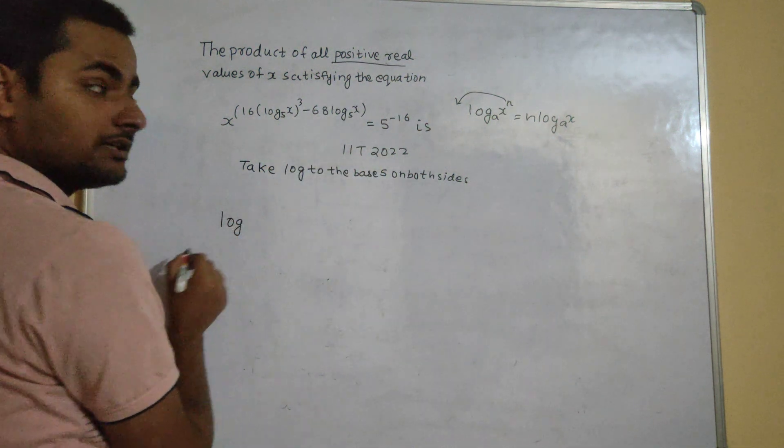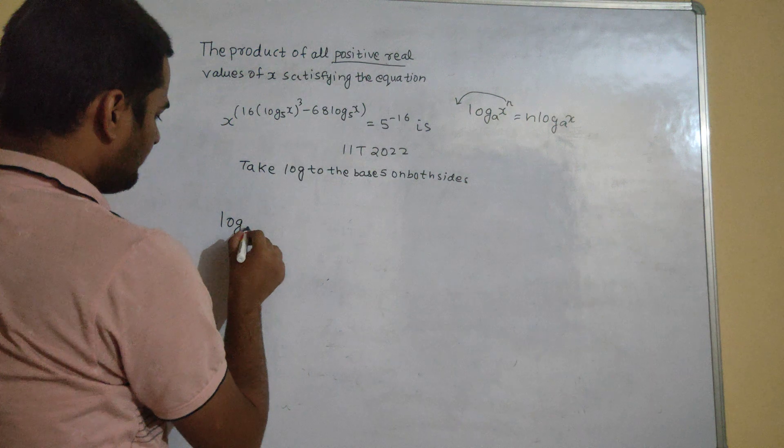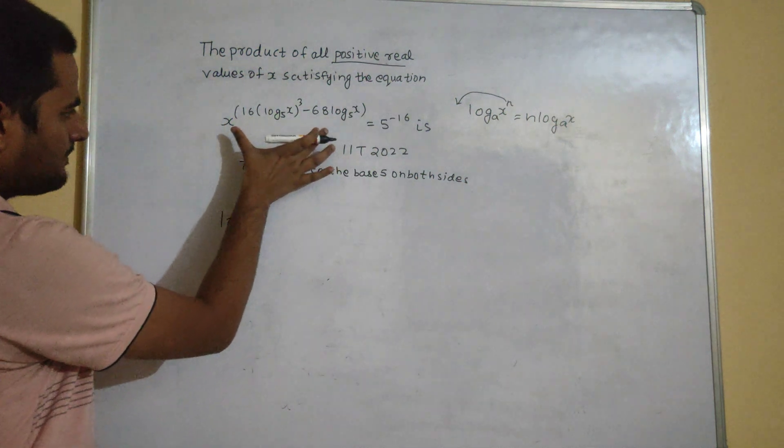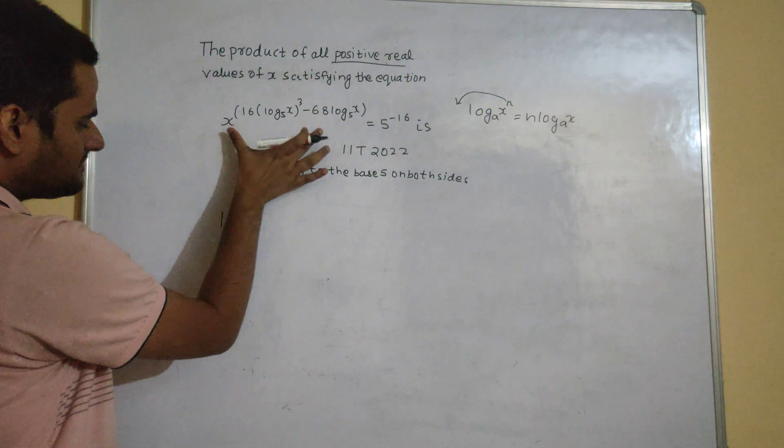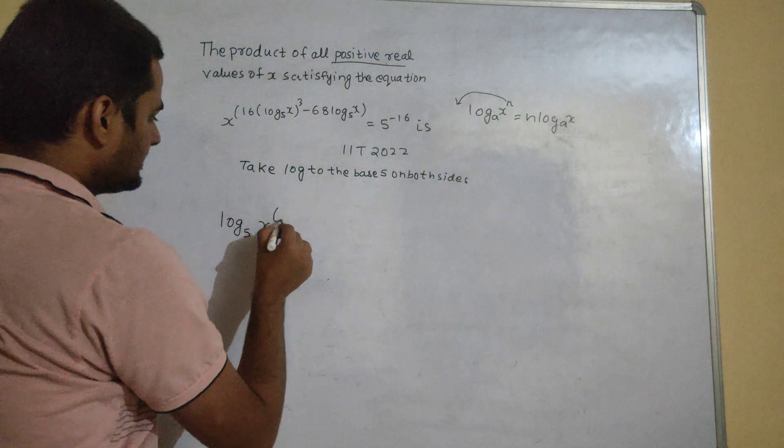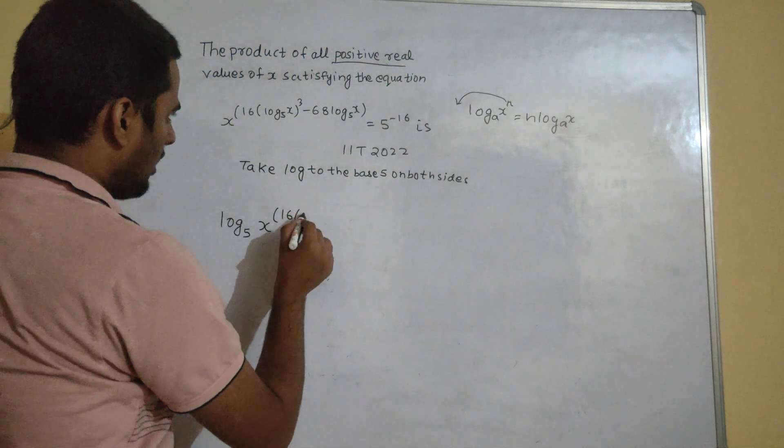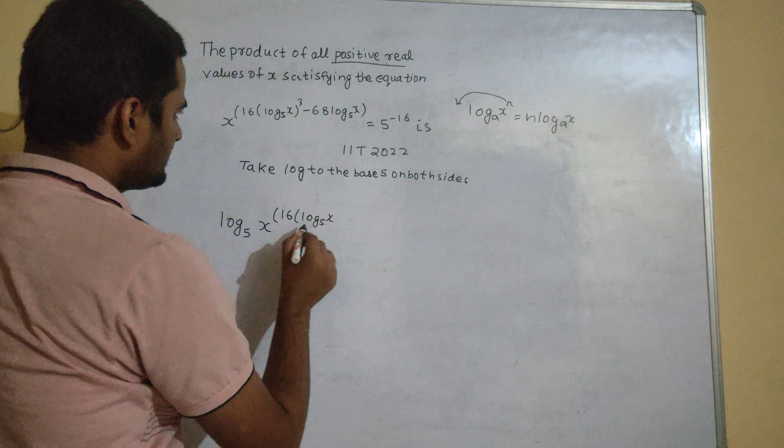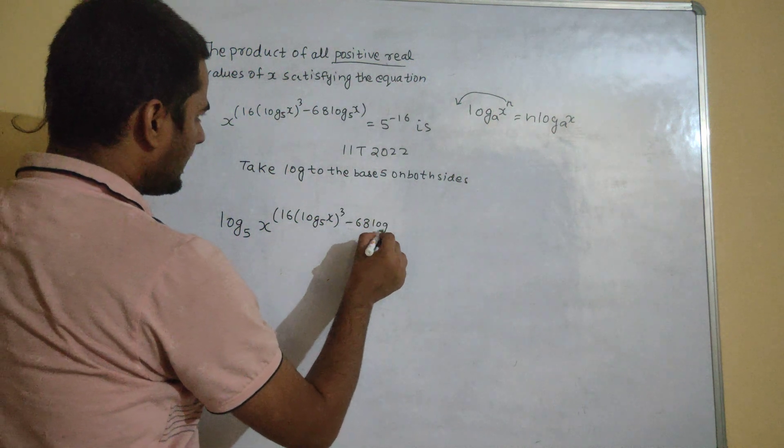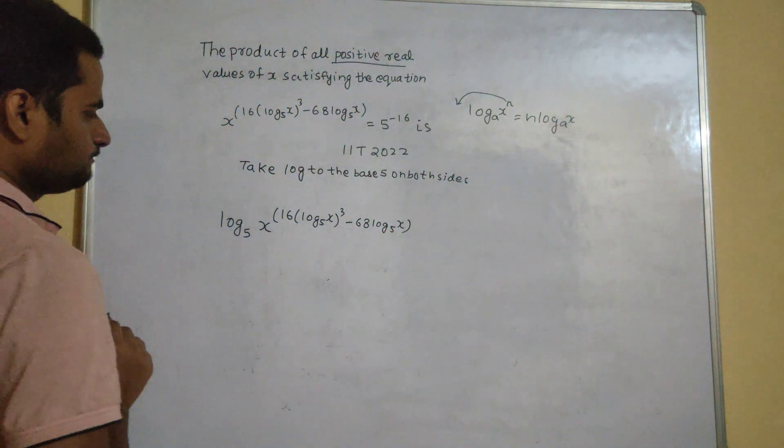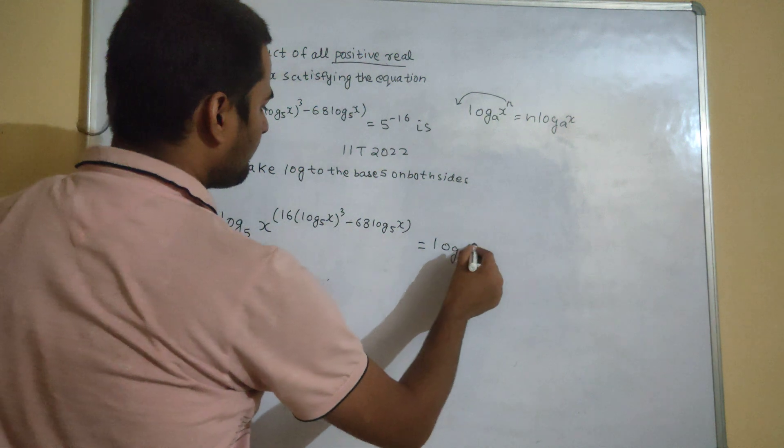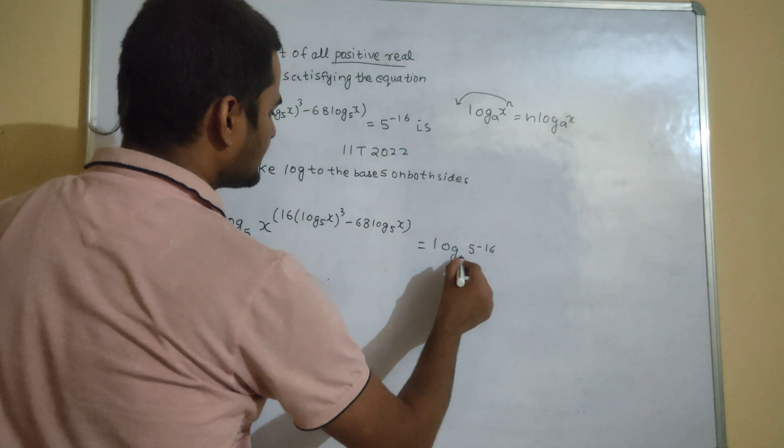So if I take log base 5 on both sides, this can be written as log to the base 5 and I am taking log on this entire thing. So this will play the role of argument. So x power, this all thing I have to copy. So log x to the base 5, cube minus 68 log x to the base 5.